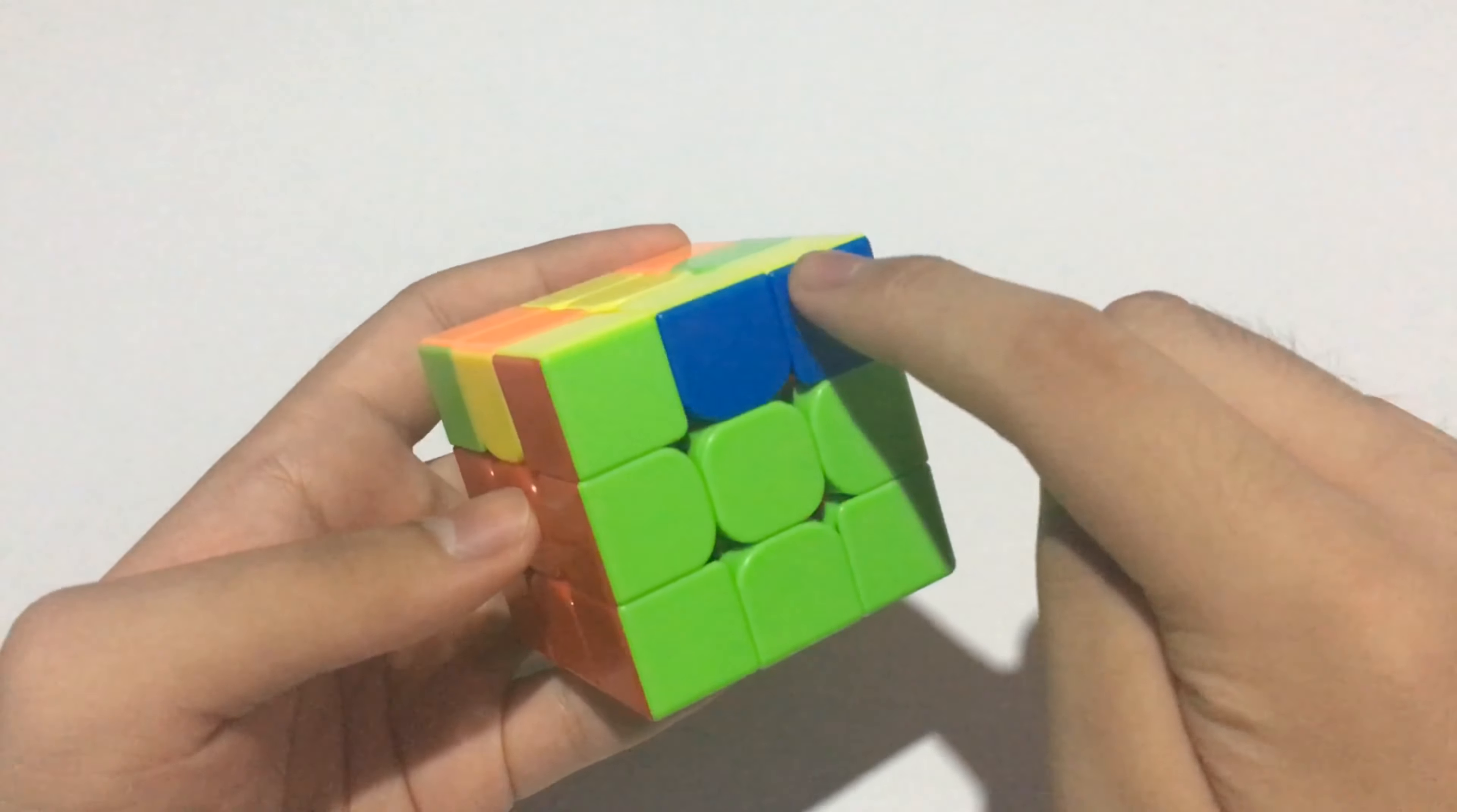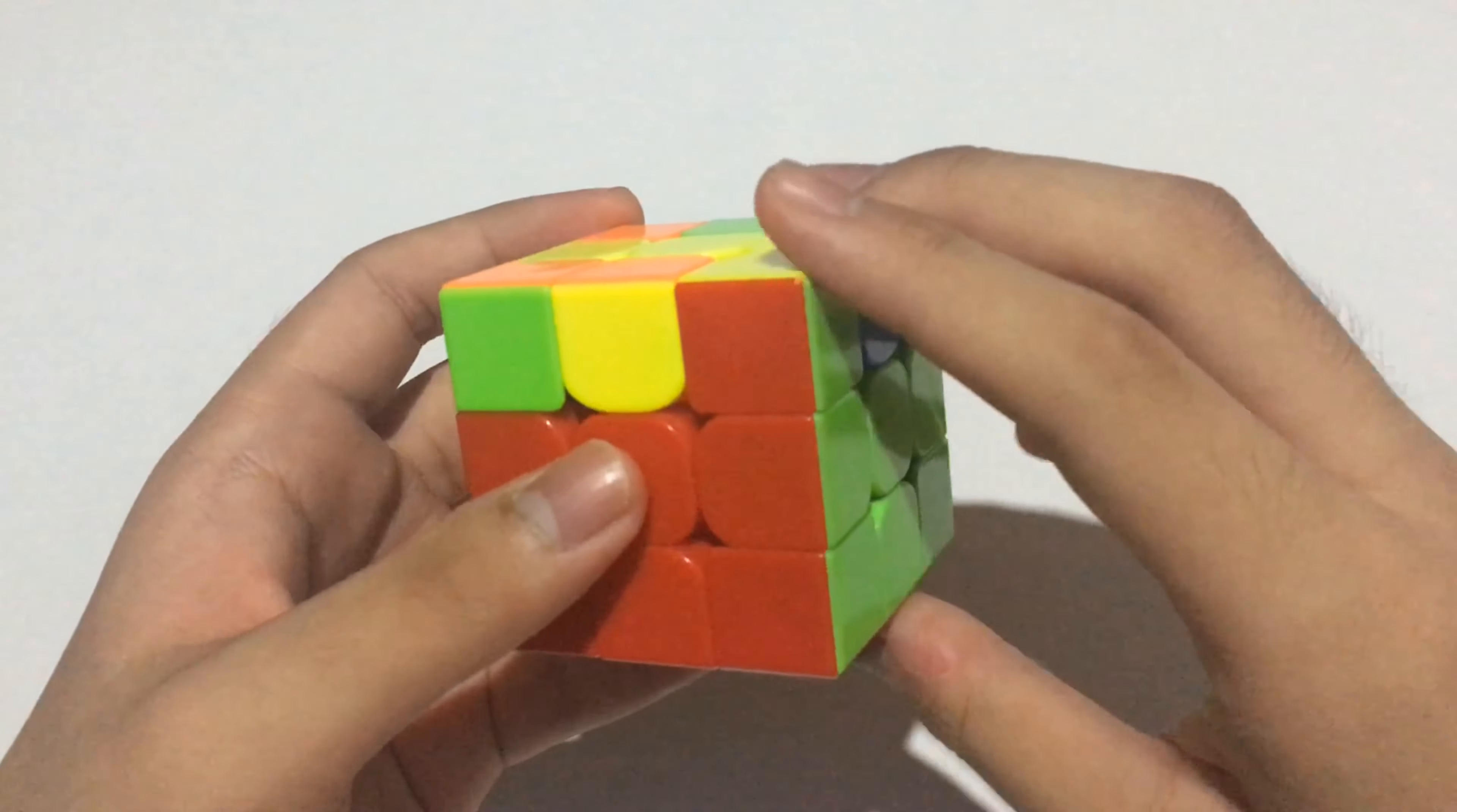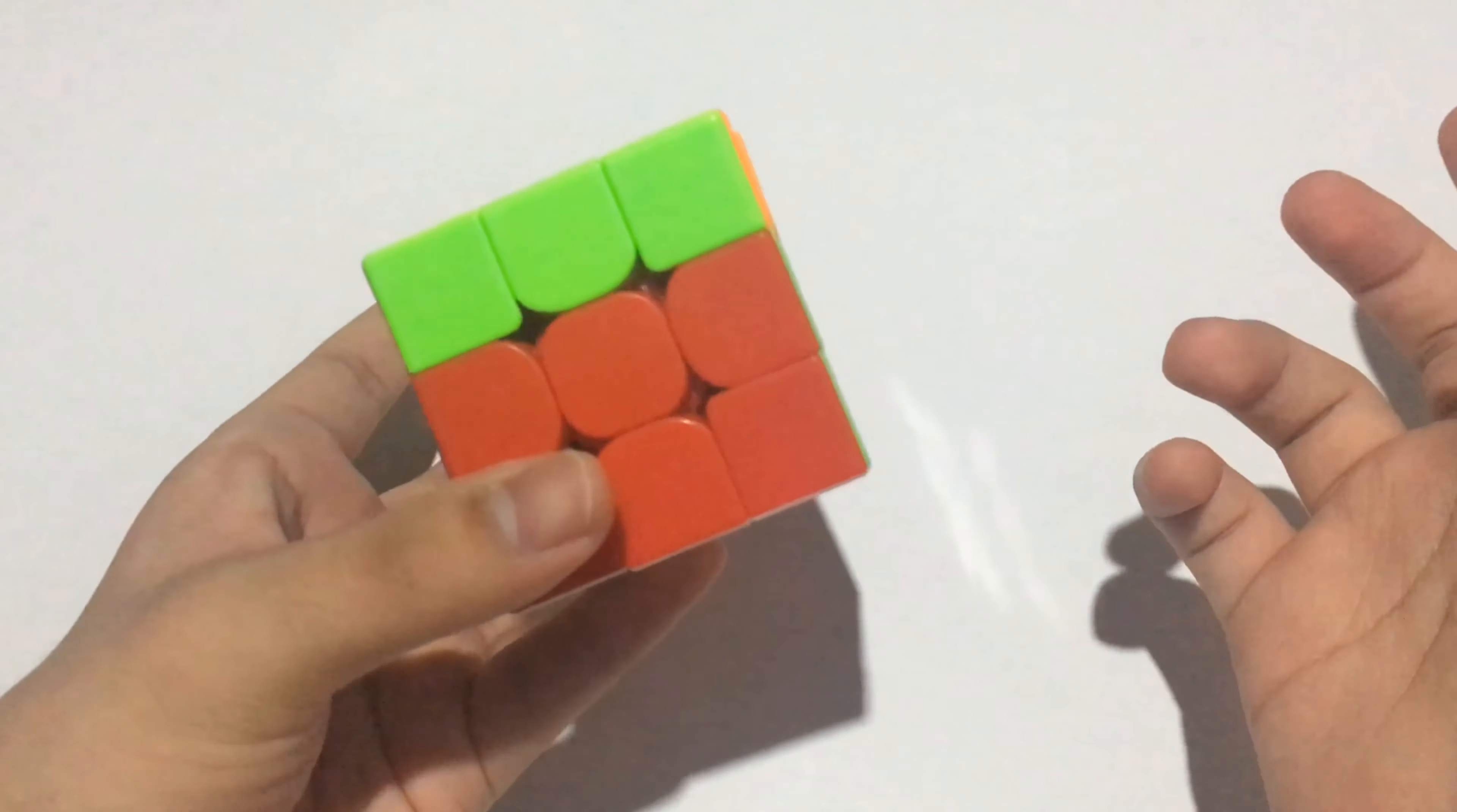Then I saw this block. So it might be a U-perm or PLL skip. Then I did the algorithm, and oh my god, it is a PLL skip.